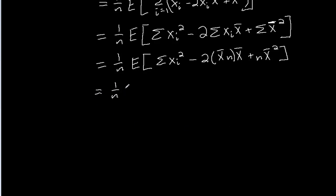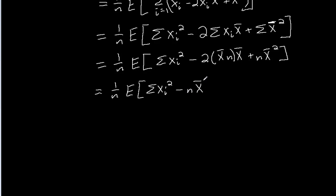This is 1 over n times the expected value of the sum of xᵢ squareds. Notice I have minus 2n x̄ squared and then plus n x̄ squared. Those two terms are going to combine, giving me minus n x̄ squared.